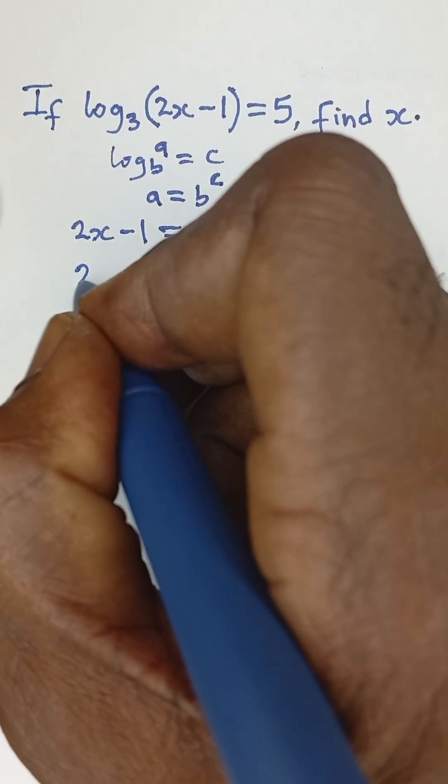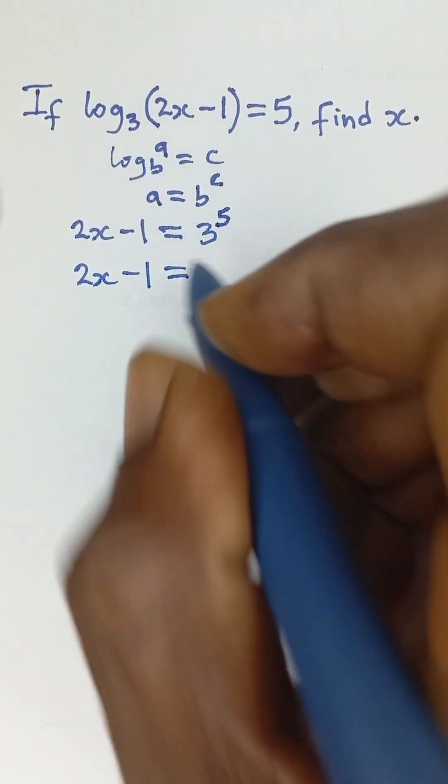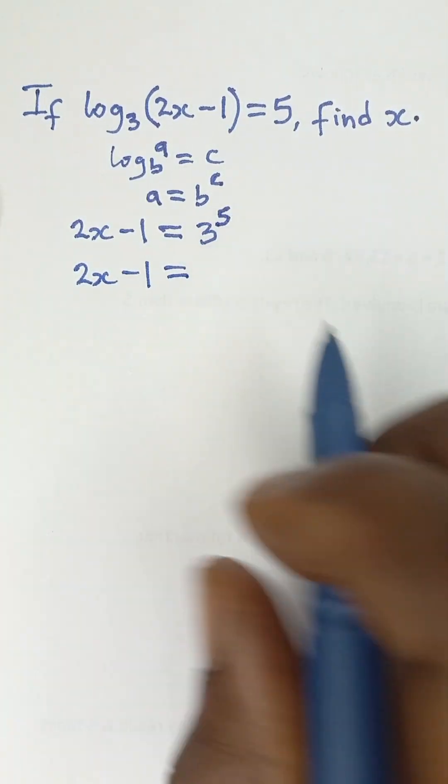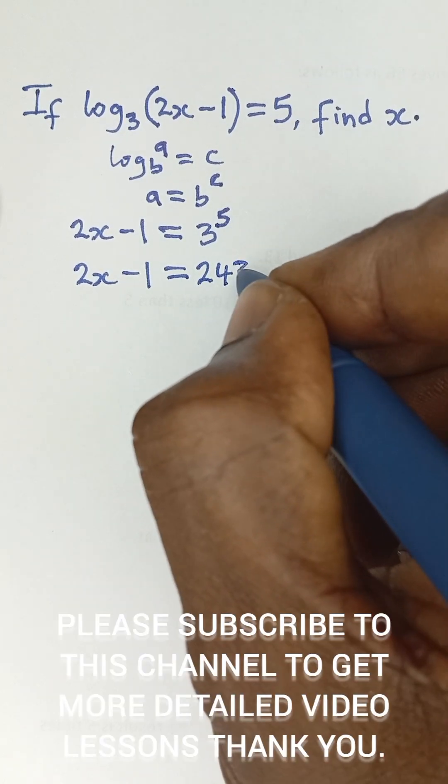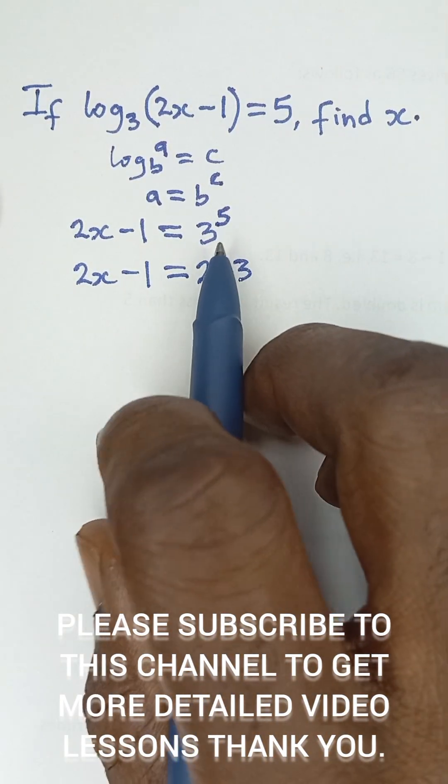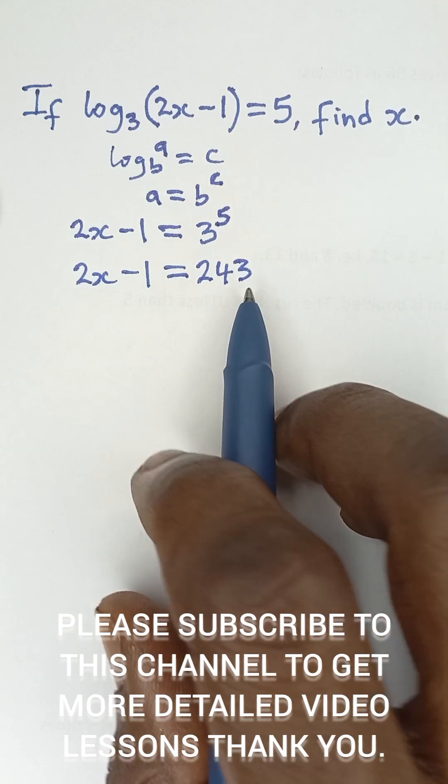So that gives us 2x minus 1 is equal to 3 raised to the power of 5, which gives us 243. That is 3 multiplied by itself 5 times will be equal to 243.